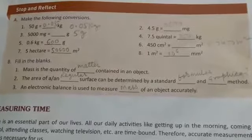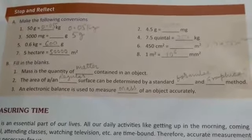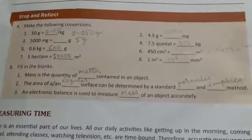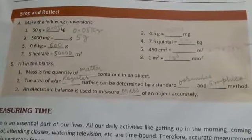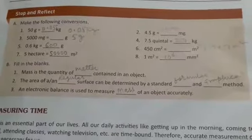Till question number A from page number 25. Now today we are going to start question number B, fill in the blanks. Let us see the first question of this section. Mass is the quantity of dash contained in an object. Answer is matter contained in an object.